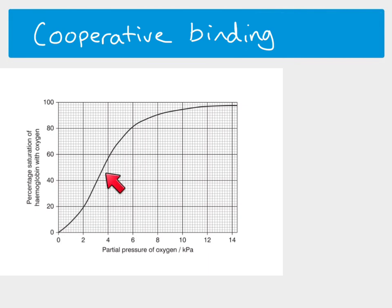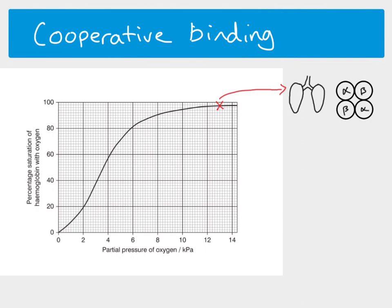The steep section of the curve and the overall S-shape are due to cooperative binding. In the lungs, at high partial pressure of oxygen, all four polypeptide chains of the hemoglobin molecule — two alpha-globins and two beta-globins — each have an oxygen molecule bound to them. This gives close to 98% saturation, since there are thousands of hemoglobin molecules in each red blood cell and the vast majority have all four binding sites occupied.